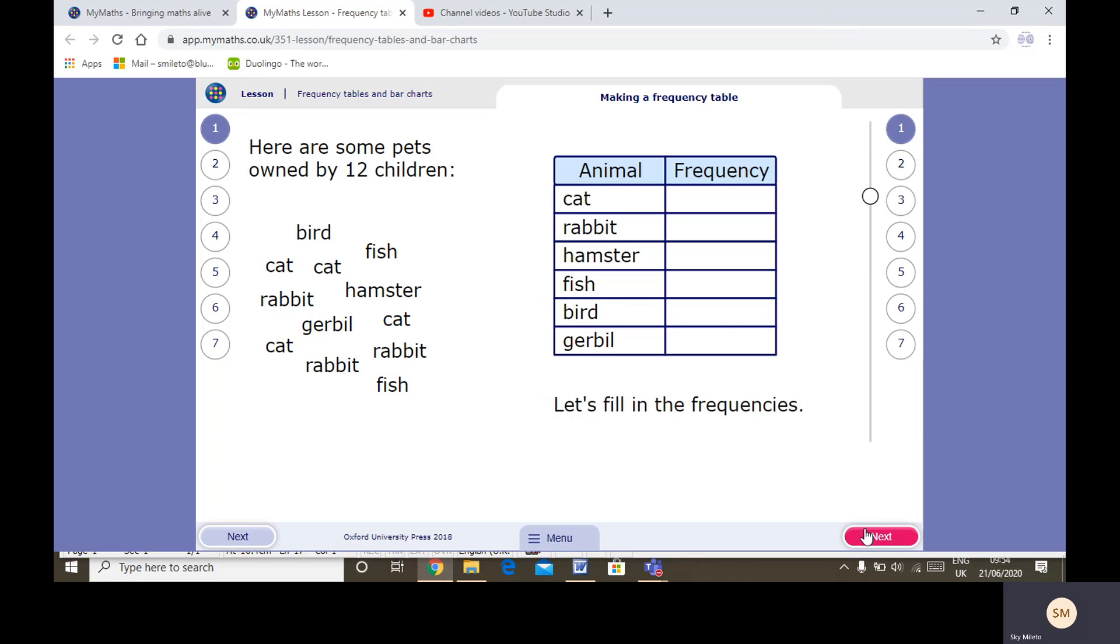So frequency means how many. We're going to fill in the frequencies, and as you might guess it's easier to do this by doing tallies or writing in the numbers. I guess because the numbers are small it's easier to write them in than do the tallies. Now we can see that the most common pet is a cat.